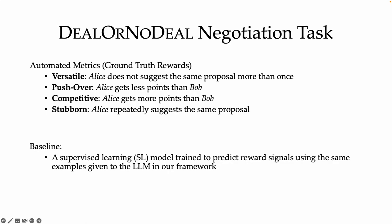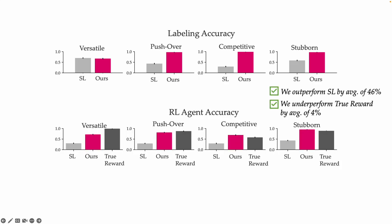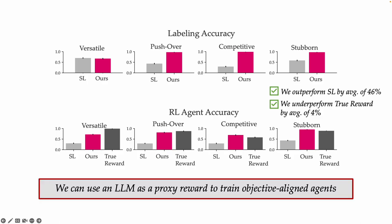Here are the styles that we came up with. We compare against a supervised learning baseline trained to predict reward signals using the exact same examples given to the LLM in our framework. We evaluate labeling accuracy — how accurately an LLM can produce reward signals with respect to the ground truth reward — and also how well aligned the trained RL agent is on a test environment. We find that our framework outperforms the baseline and gather evidence that it can train objective-aligned agents.